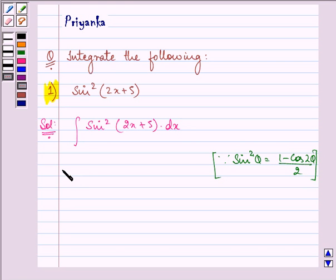1 minus cos 2 theta by 2 in the function which is given to us, where theta is 2x plus 5, we have 1 minus cos 2, theta is 2x plus 5 divided by 2 dx.